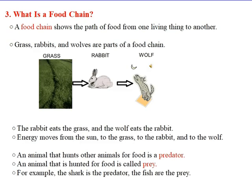Now let's move to a food chain. What is a food chain? A food chain shows the path of food from one living thing to another. For example, grass, rabbits, and wolves are all parts of a food chain. The rabbit eats the grass, and the wolf eats the rabbit.